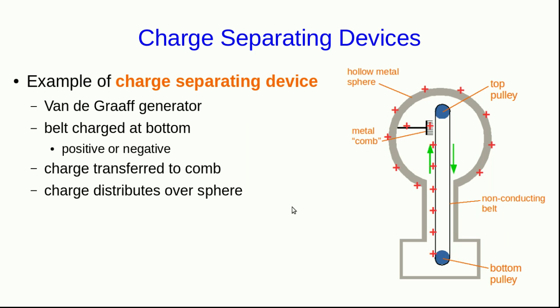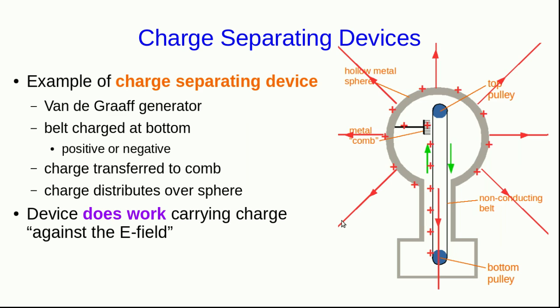Note that once the sphere starts becoming charged, there's an electric field generated by the sphere. And as the Van de Graaff generator now moves charge up the belt, it is doing work carrying that charge against the forces that the E field exerts on the charge on the belt. And so, like any other situation of charge separation, positive work is being done.